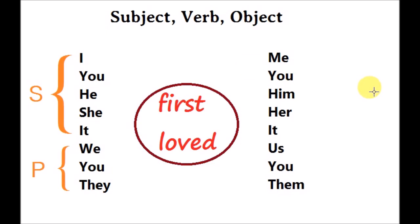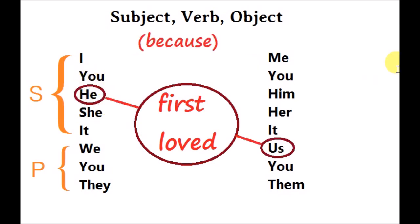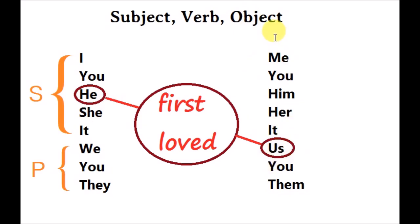In the second clause, 'because he first loved us,' you've got the subject 'he' — God — the verb 'to love,' and the object 'us.' The word 'because' links the two clauses together to make a sentence. It's important to identify the subject and the object in any clause because it gives us a better understanding of which elements are active and which are passive.